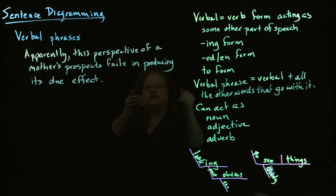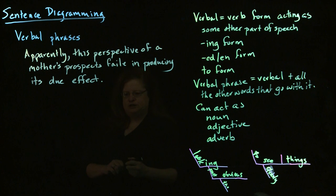In this case, it's acting as a noun, which, if you want the technical term for it, is called a gerund. But it's an ing form of the verb without any helping verbs, so it's a verbal. So, how are we going to put that in the sentence?